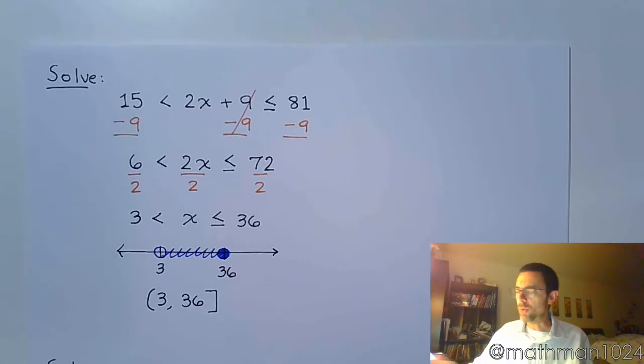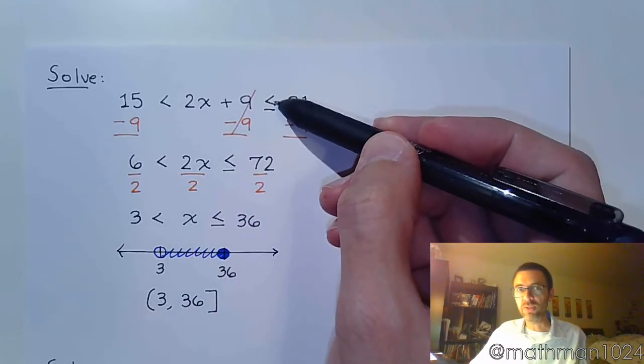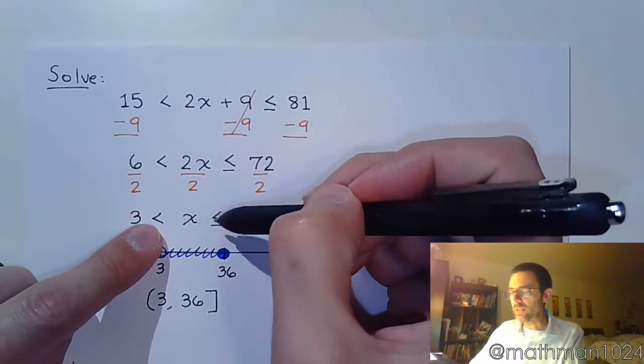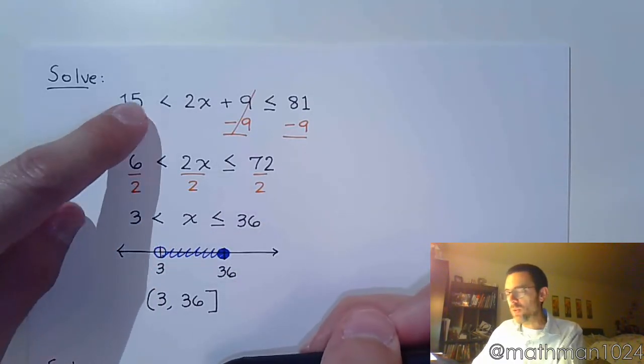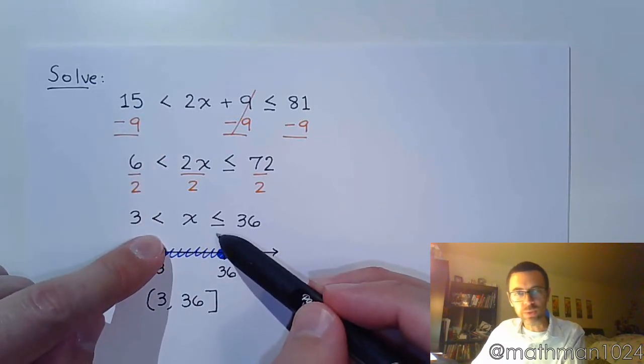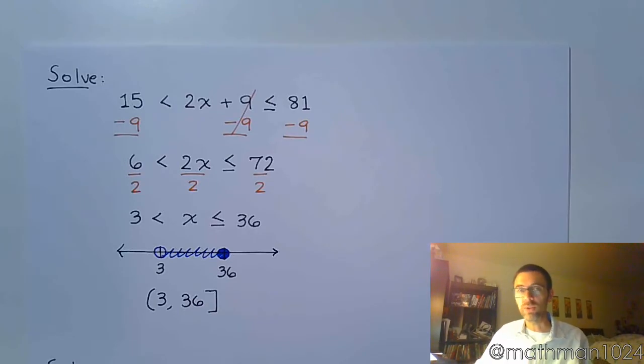The math would have been the same no matter what these inequalities were. So, if this had just been less than instead of less than or equal to, you would have had less than, less than, open, open, both parentheses, right? Had this one been less than or equal to, they're both less than or equal to, they're both closed, they both get brackets. But the math would still be the same from 3 to 36.